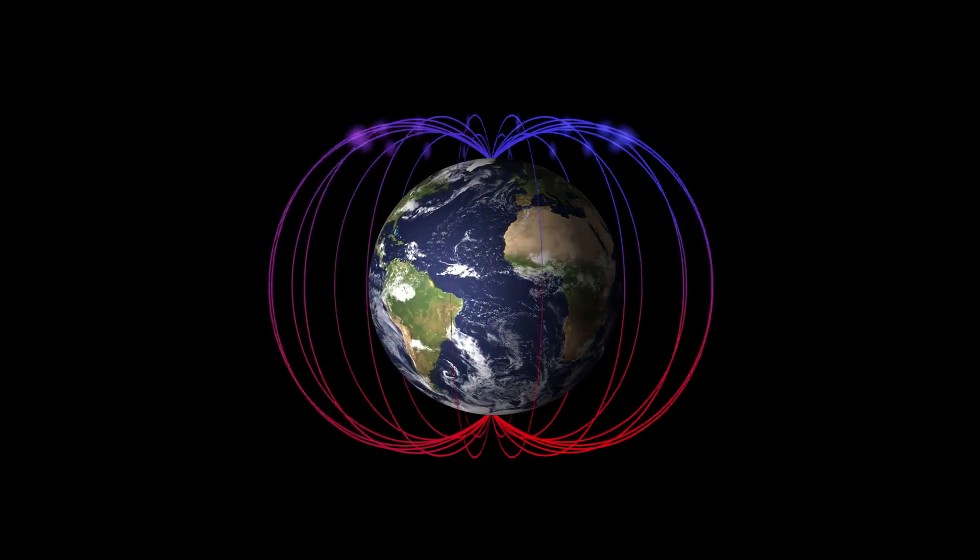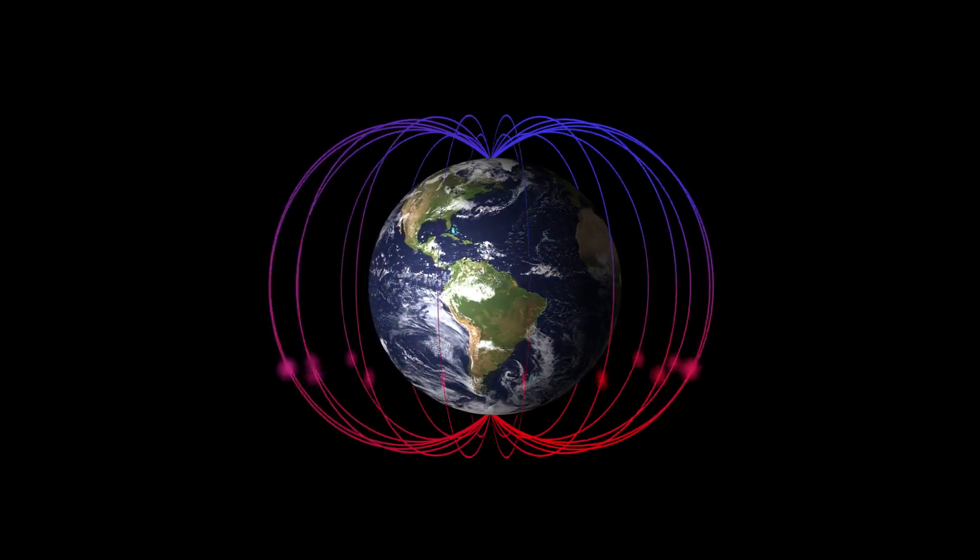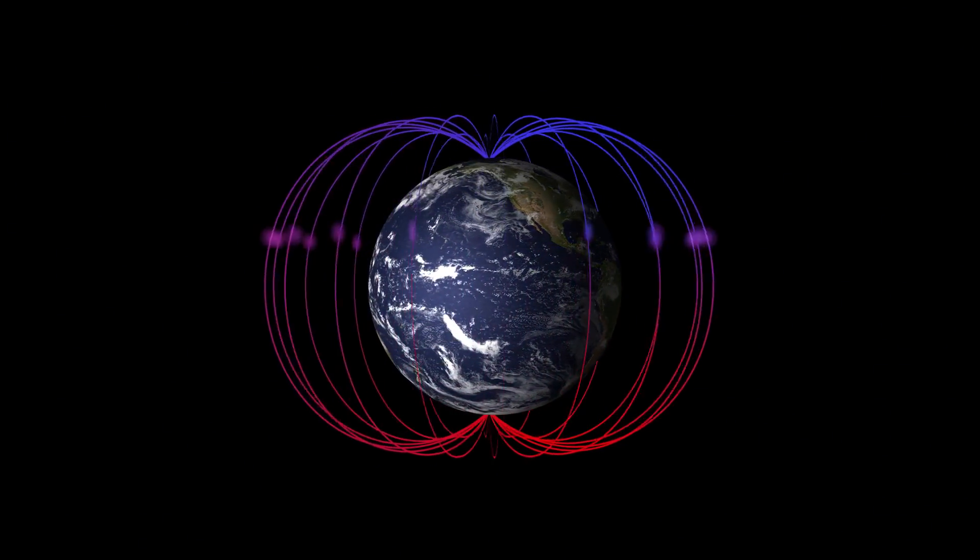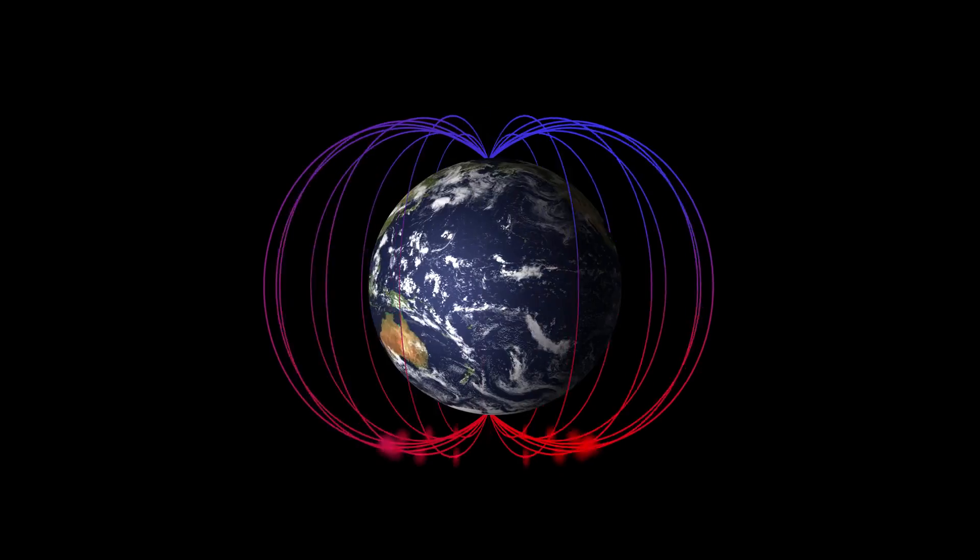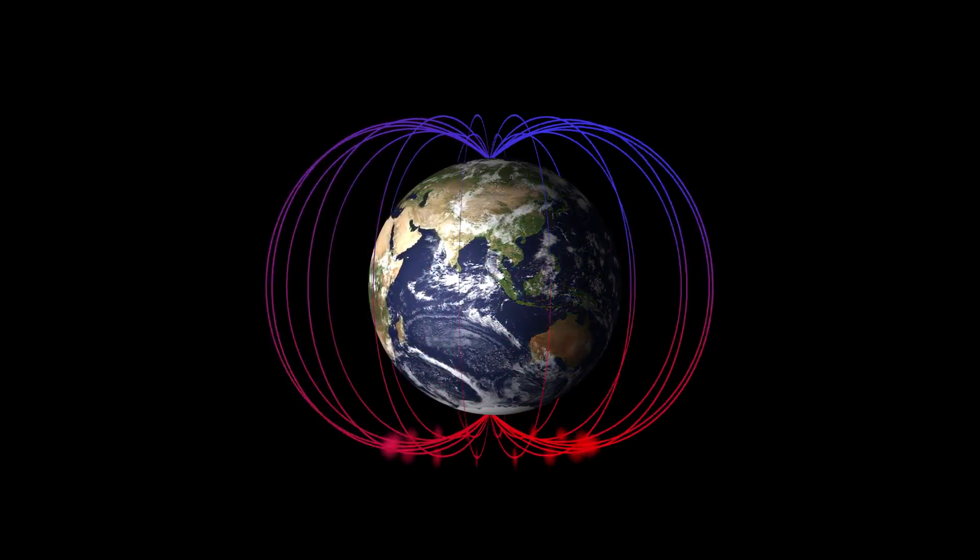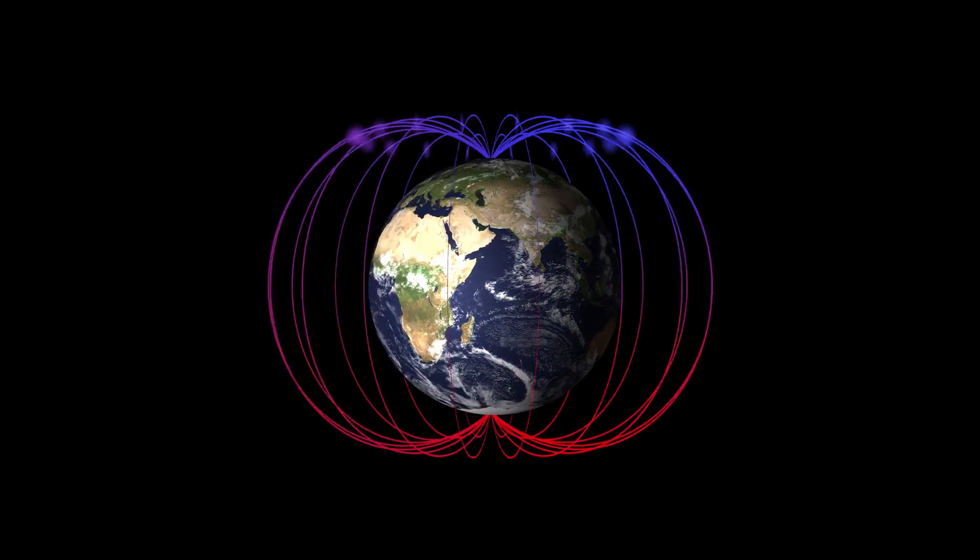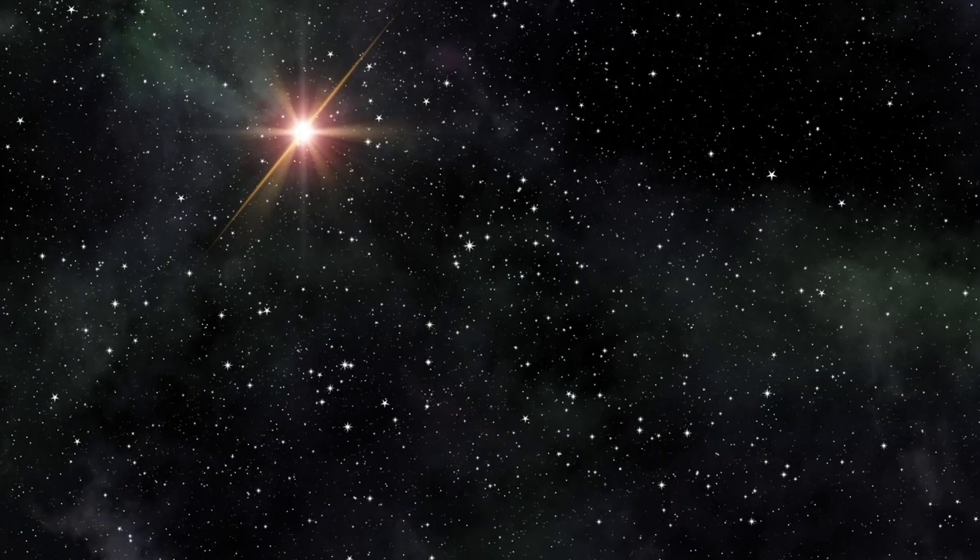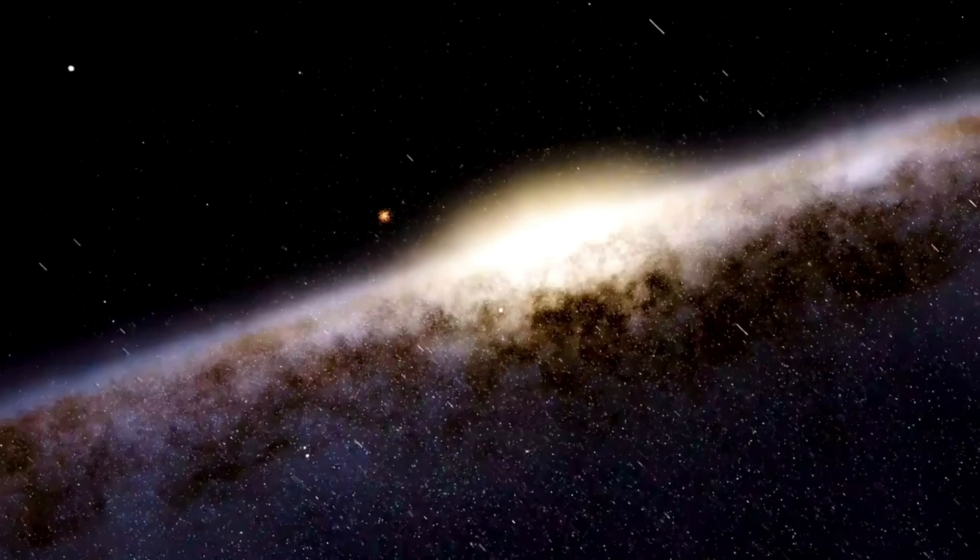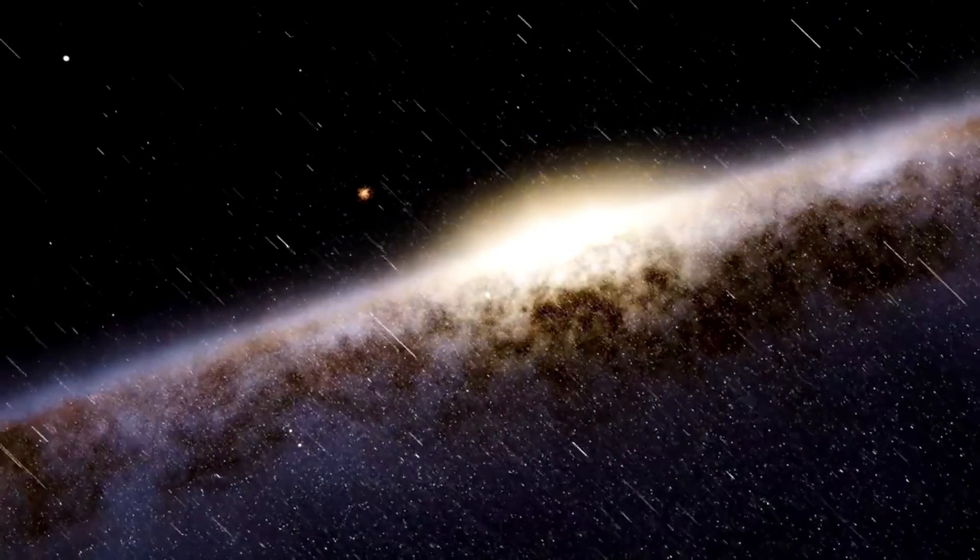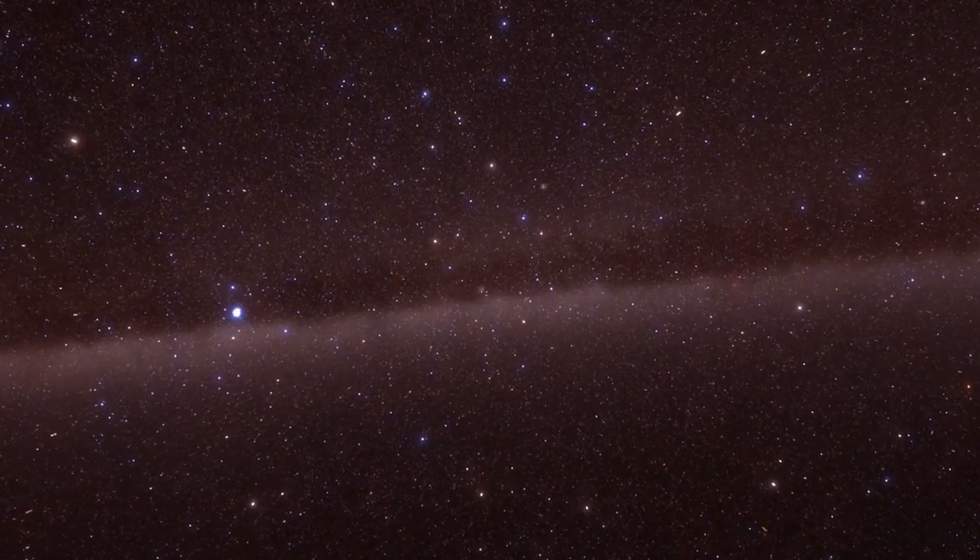In modern times, Earth's magnetic field is again weakening, albeit slowly. Measurements indicate a roughly 10% reduction in field strength over the past century. While not alarming in itself, this gradual decline decreases the planet's protection against solar particles. If a large coronal mass ejection were to strike during a period of reduced magnetic shielding, the effects could be amplified, producing stronger geomagnetic currents, more intense auroras, and greater radiation exposure for satellites and astronauts.